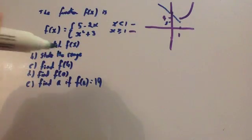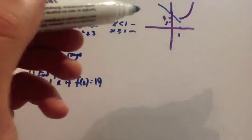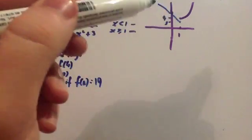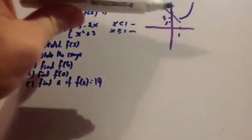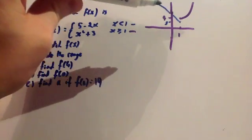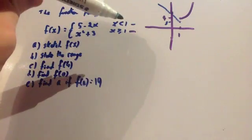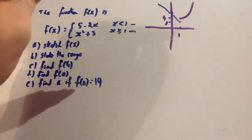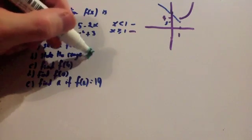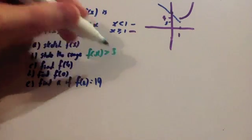Next: state the range. The range is the heights of these graphs. Both graphs are always going to be above 3. Remember the blue straight-line graph is approaching 3 but doesn't actually reach it — x never equals 1 for that part — so for the range it's going to be f(x) > 3.